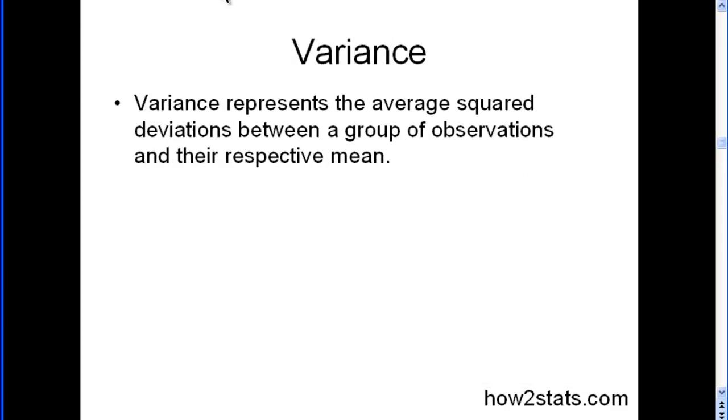So variance. Variance represents the average squared deviations between a group of observations and their respective mean. It's a measure of spread. And this is the formula. So the sum of the differences between an observation and its mean, squared, divided by the number of observations,